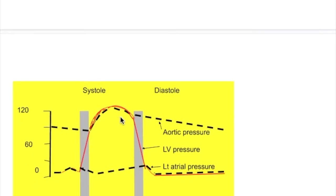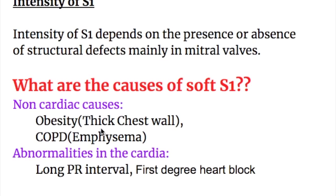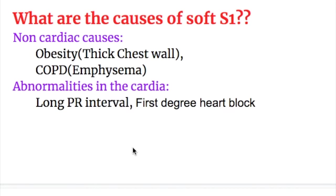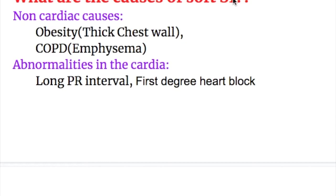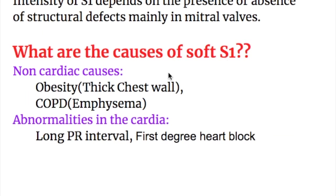The normal atrial pressure at the beginning of systole is zero, then rises — in the right atrium to four to six millimeters of mercury, and in the left atrium to seven to eight millimeters of mercury. The intensity of the first heart sound depends on the pressure and the presence or absence of structural defect, mainly in the mitral valve. The causes of soft first heart sound are divided into non-cardiac causes, abnormalities in the heart, and abnormalities in the cardiac valve. Non-cardiac causes include obesity, where the thick chest wall decreases the intensity, and COPD or emphysema due to increased lung volumes.